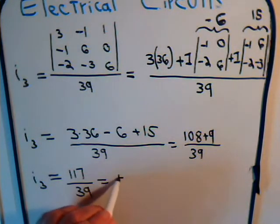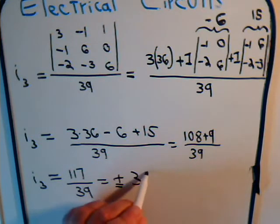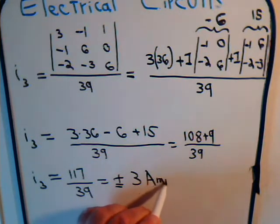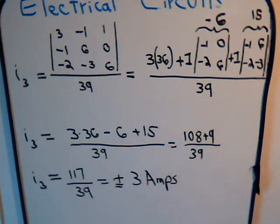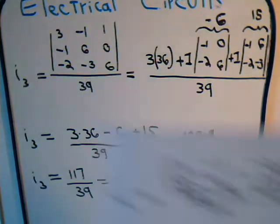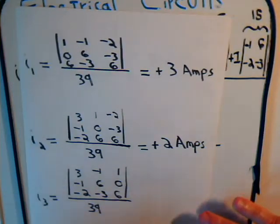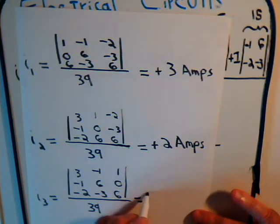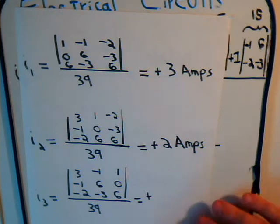So we have I3 is equal to 117 divided by 39, that equals plus 3 amps. We can go back to here, I3 equals plus 3 amps.